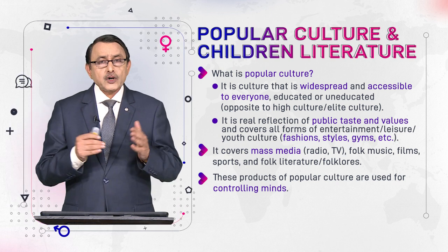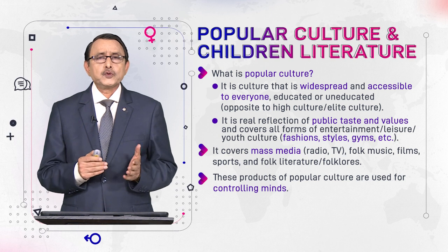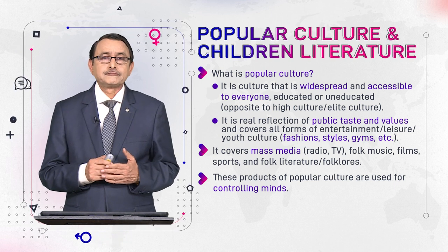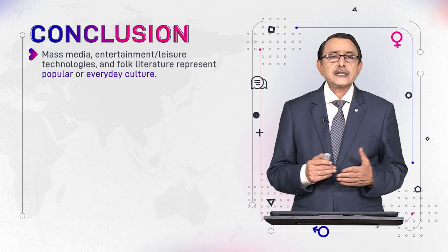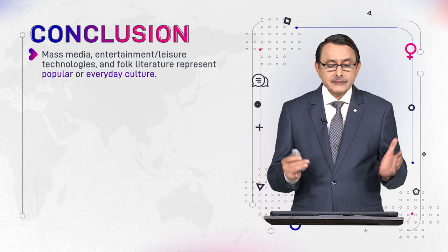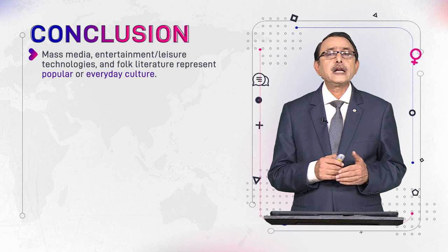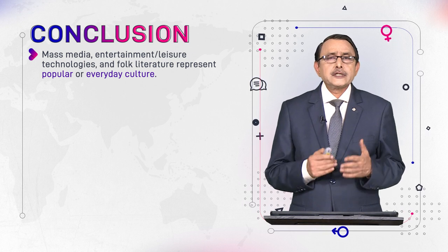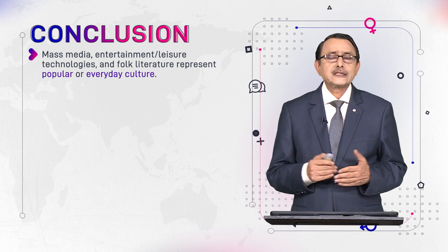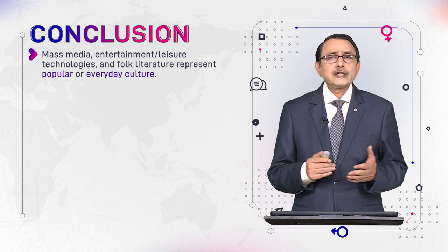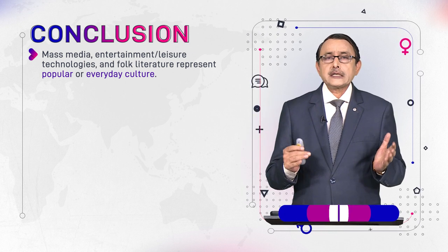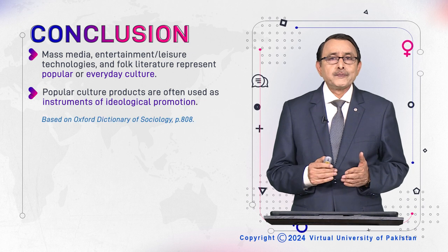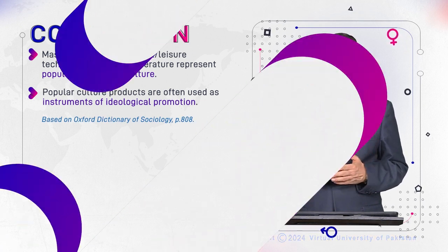The products of popular culture — TV, radio, and other resources — are used to control the minds and behaviors of people. In conclusion, mass media, entertainment, and folk literature, which includes folk stories, fairy tales, and similar things collectively called folklore, represent popular or everyday culture. These products of popular culture are used to shape minds and influence the thinking of people.